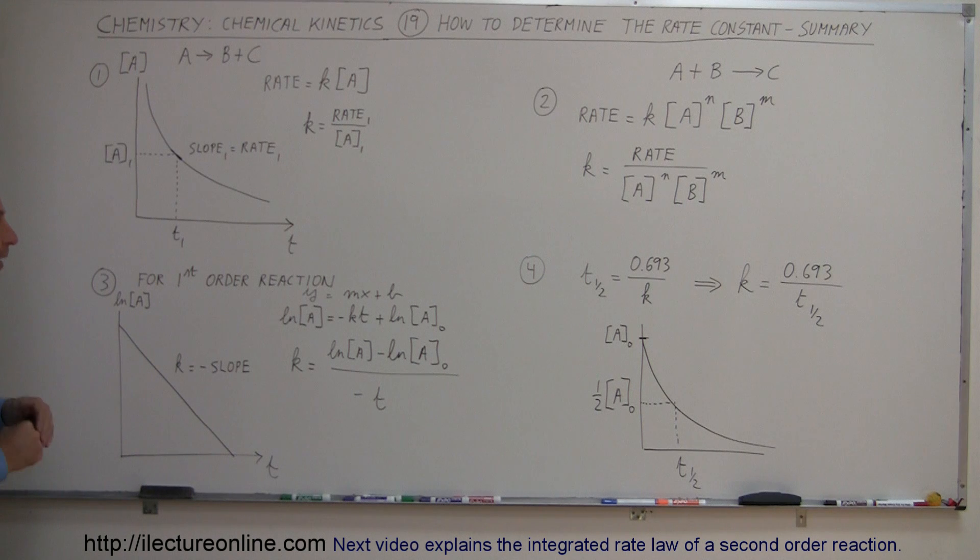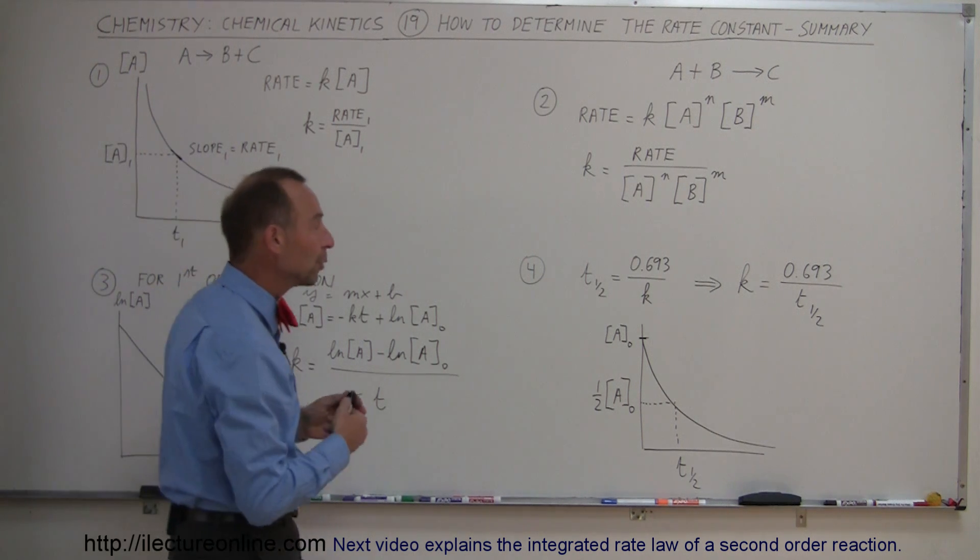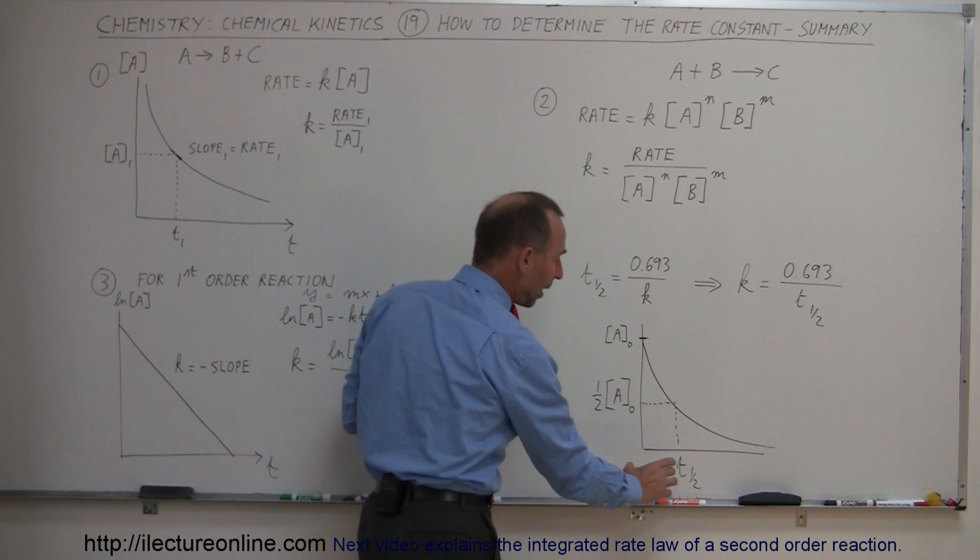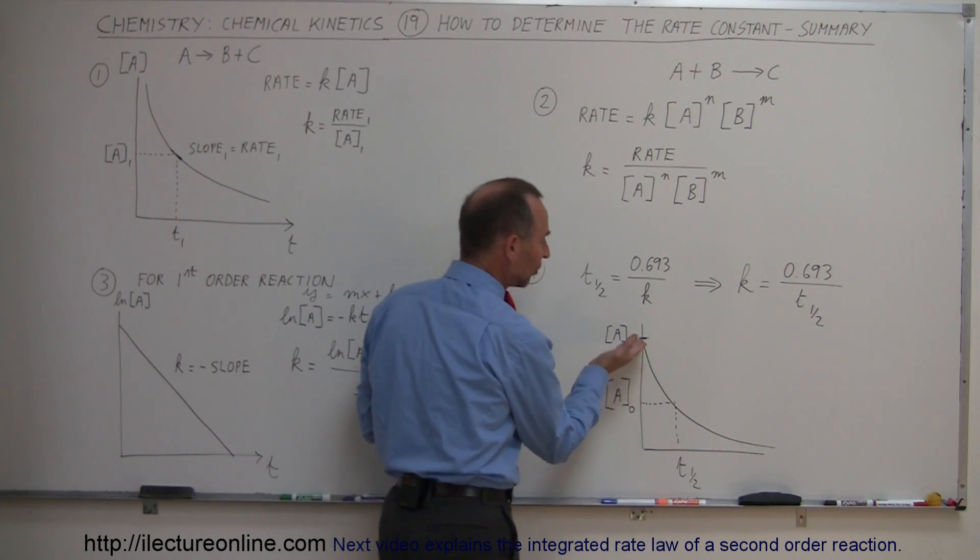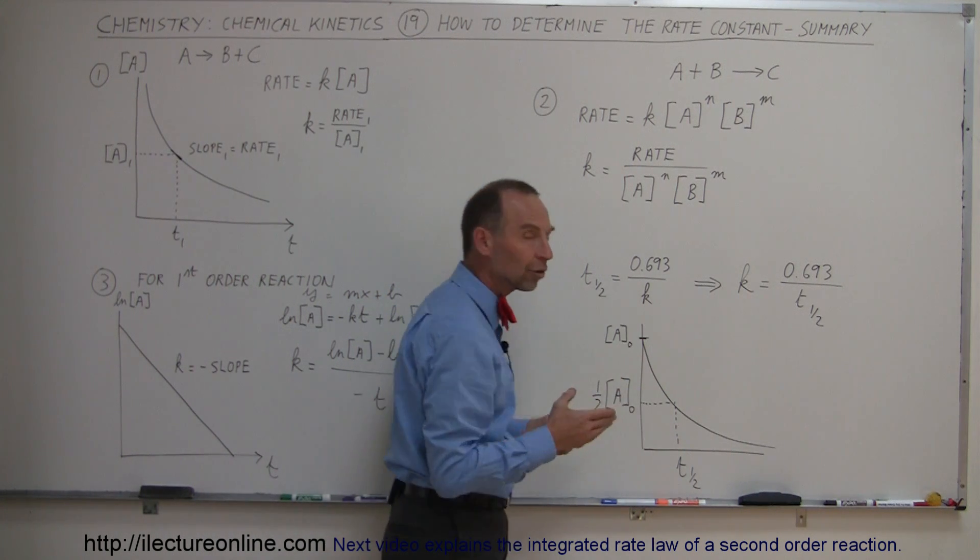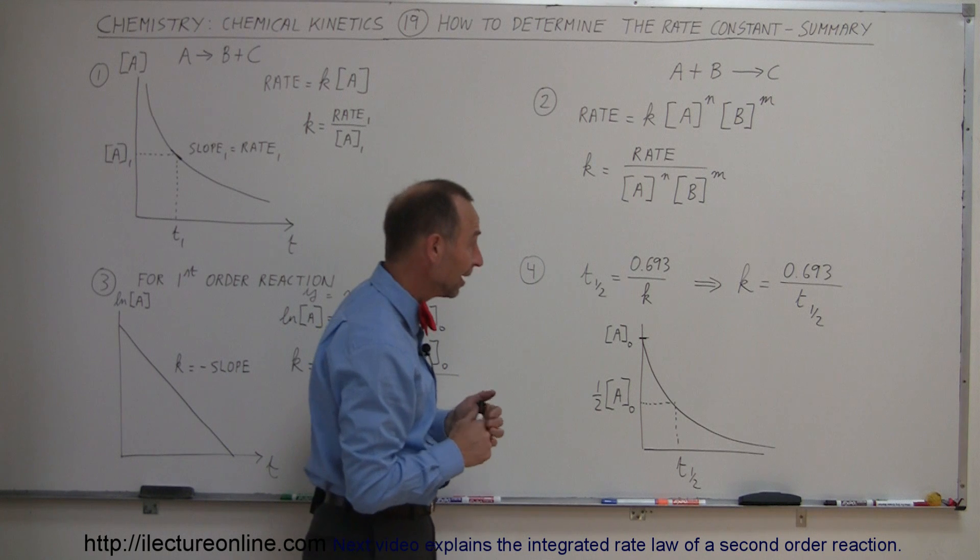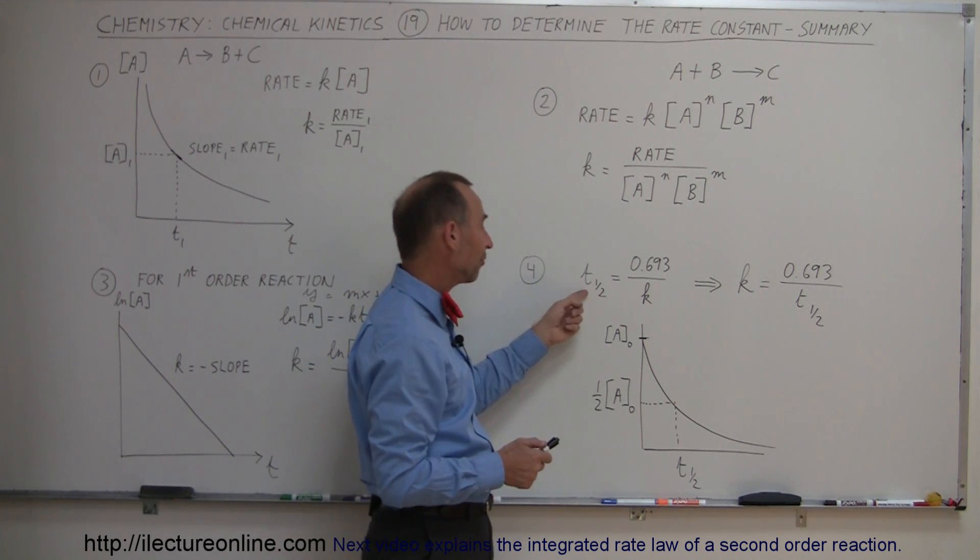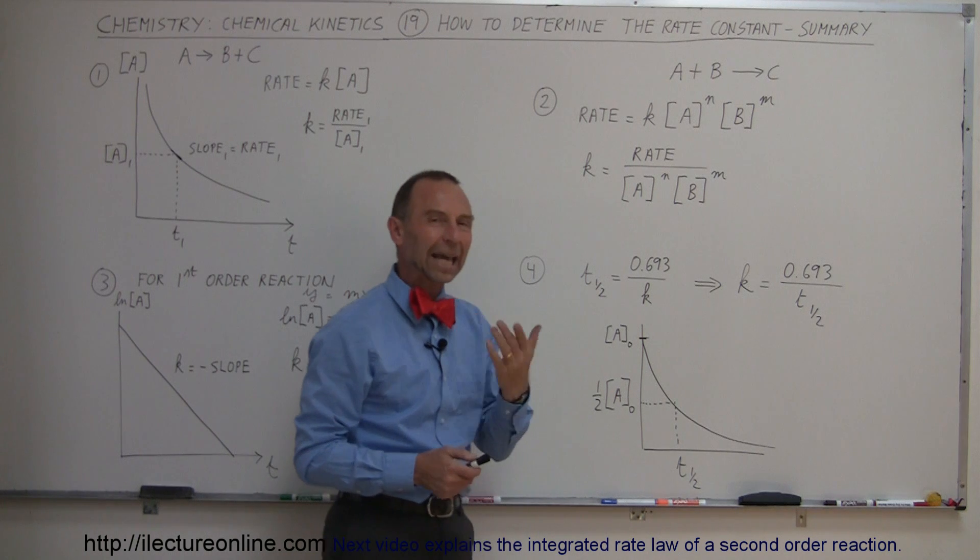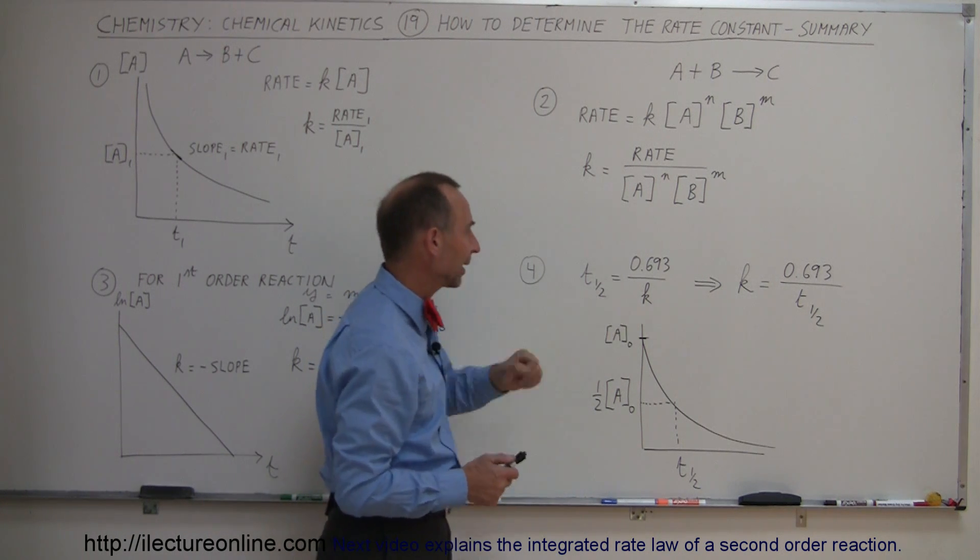And four, if we know the half-life of the reaction, for example, if we know how much time has gone by, so that now we only have half of the original concentration of the reactant left, if that is the case, we know that the half-life is equal to 0.693, which is the natural log of 1 half, divided by K.